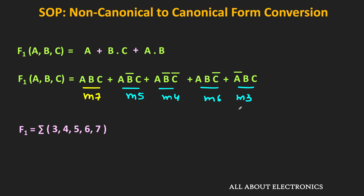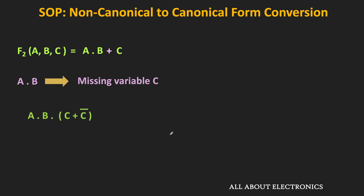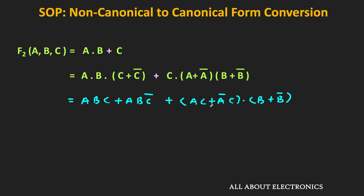Let us take one more example. Function F2 is also in non-canonical form. In the first term, variable C is missing; in the second term, variables A and B are missing. We add the missing variables, expand, and after full expansion we get: A·B·C + A·B·C̄ + A·B·C + Ā·B·C + A·B̄·C + Ā·B̄·C, giving us a total of six terms.